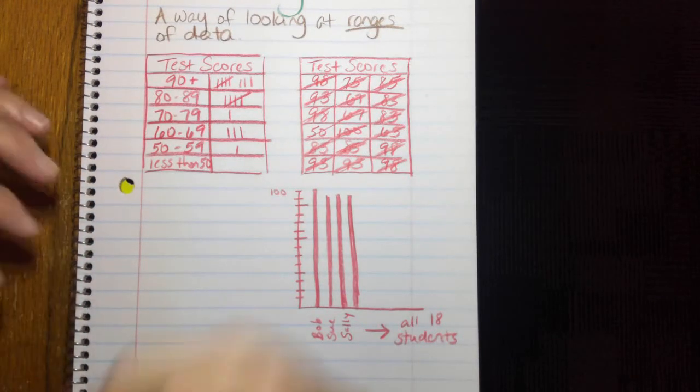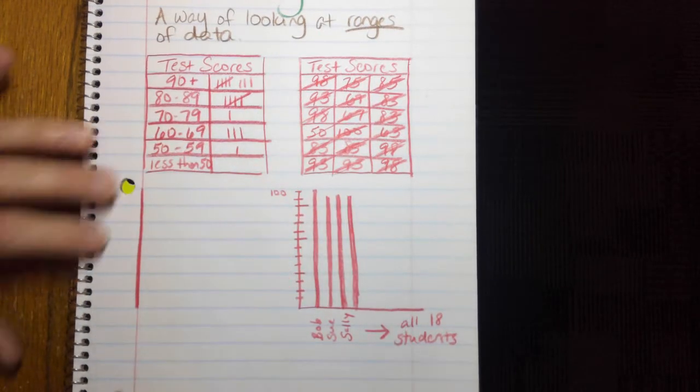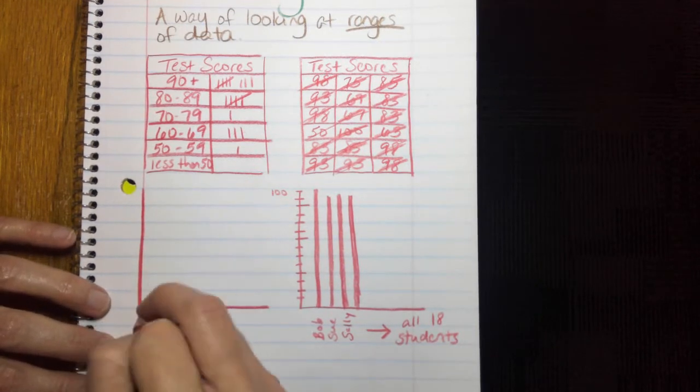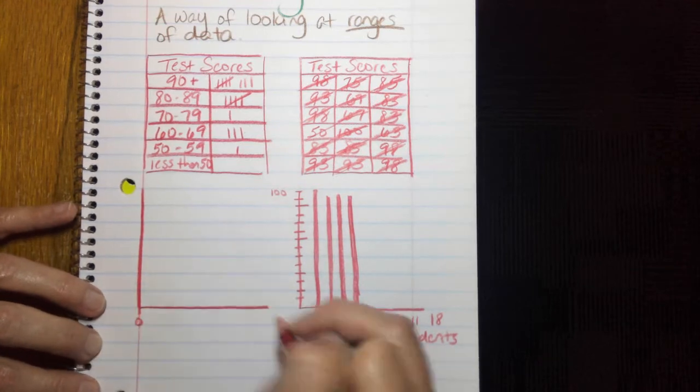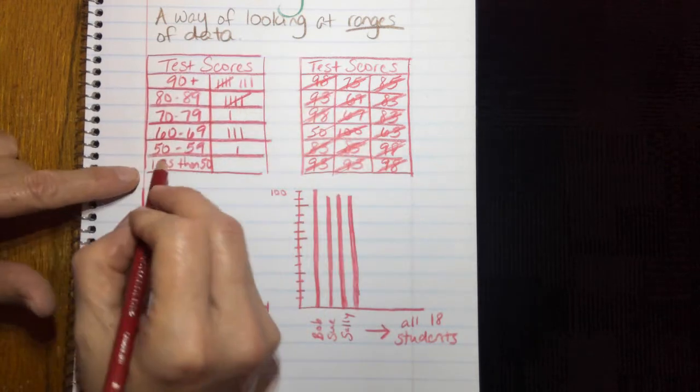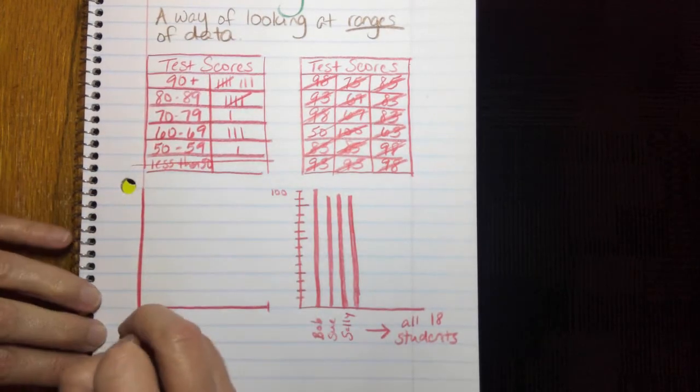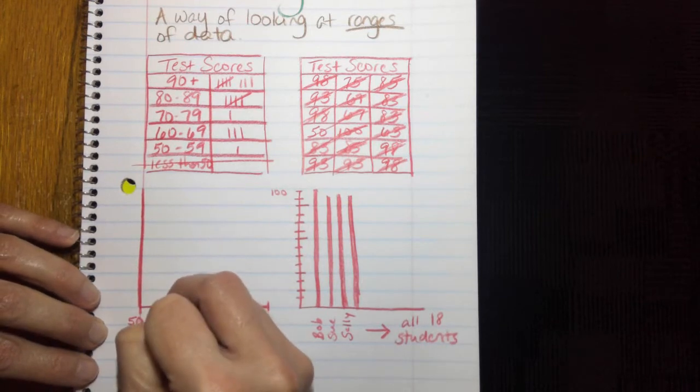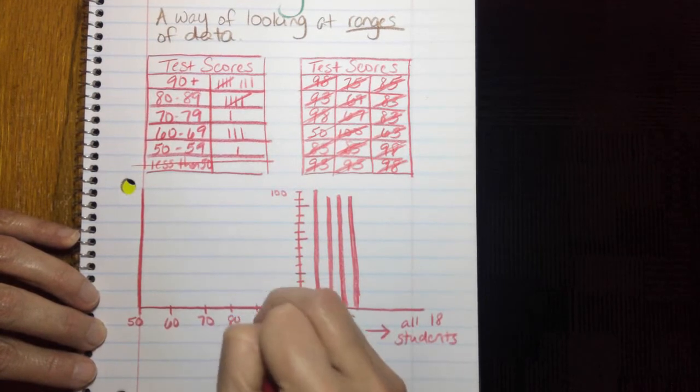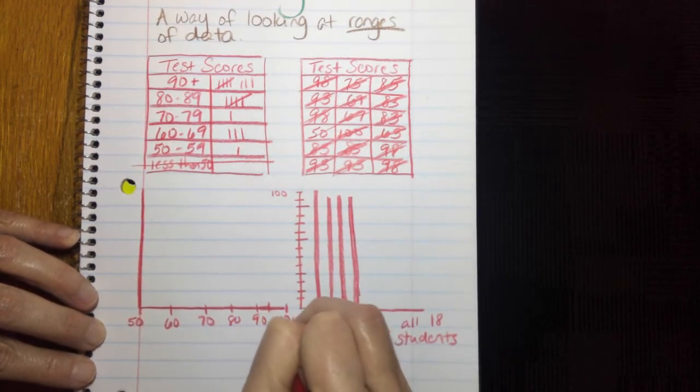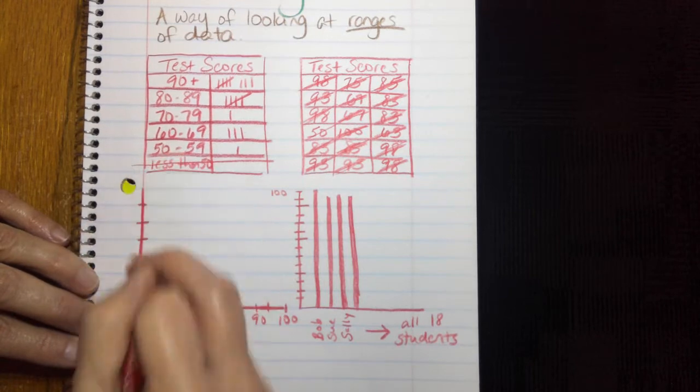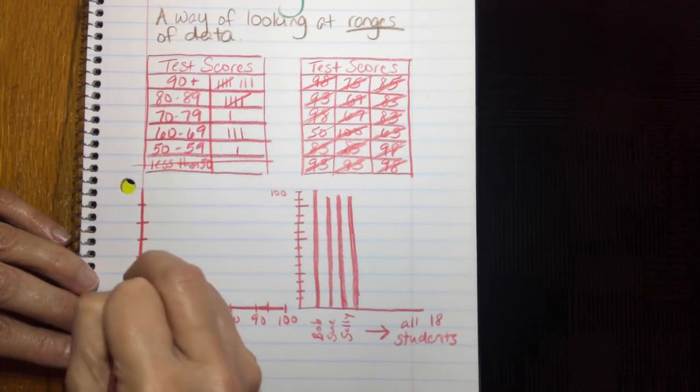So now I'm going to go through and I'm going to make this same kind of bar looking thing. But for here, I'm going to have 0. You know what? I didn't have anybody less than 50, so I'm actually going to take that out. I'm going to do 50, 60, 70, 80, 90, 100. And then 2, 3, 4, 5, 6, 7, 8.